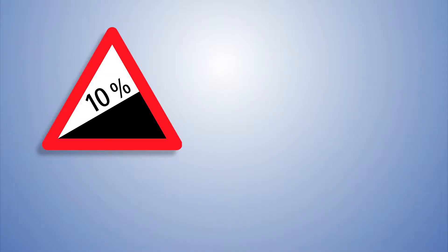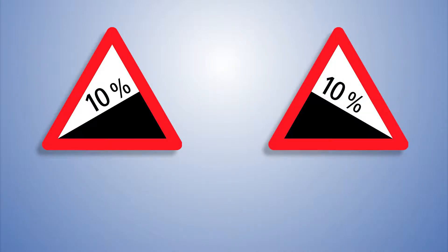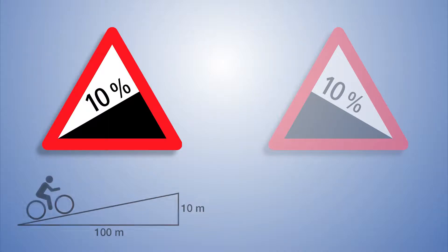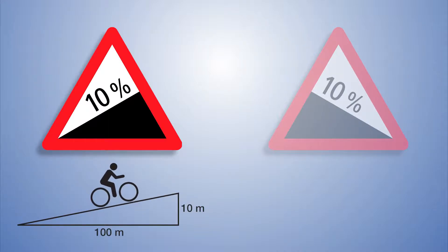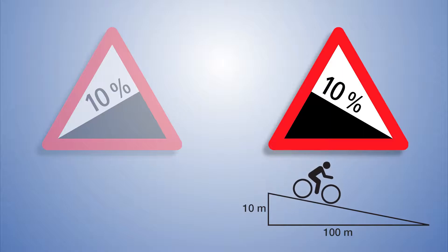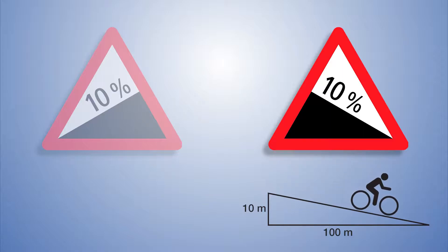From the road, we know positive inclination as a rise and negative inclination as a slope. A rise of 10% means that the terrain on 100m rises by 10m. A slope of 10% means that the terrain on 100m drops by 10m.